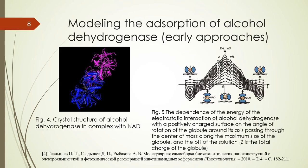There is the structure of alcohol dehydrogenase — a ferment observed in the liver of different organisms such as horses, mice, and humans. This protein converts alcohol into simpler substances, for example aldehydes, ketones, and carbon dioxide. You can see the graphics of dependence of the energy of electrostatic interaction of alcohol dehydrogenase with a positively charged surface on the angle of rotation around its axis passing through the center of mass along its maximum dimension, and on the pH of the solution — that is, the total charge of the molecule. However, this was observed about 40 to 50 years ago.